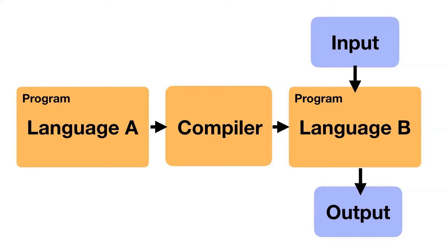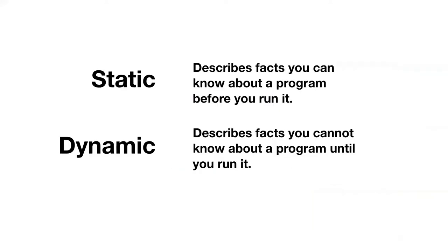That means the compiler can only know some things about the program — it can't know everything. The things it can know are called 'static.' Static describes the facts you can know about a program without running it. Dynamic describes the facts you can't know until you run it. These two words are very useful and general, and so they get repurposed in programming to mean different concepts in different contexts — it's usually some flavor of the same idea. For this talk, that is what these words mean.